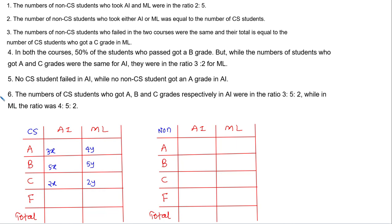Statement number 5 says no CS student failed in AI. This means the total number of CS students is 3x + 5x + 2x = 10x. Since all CS students take both courses, the total number in ML is also 10x. Statement 5 also says no non-CS student got grade A in AI, so that cell is 0.